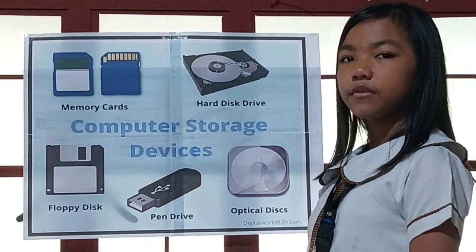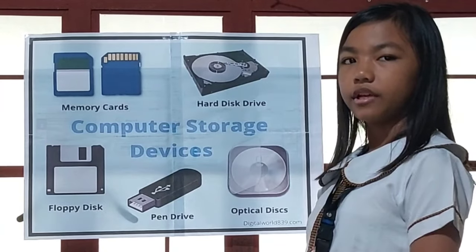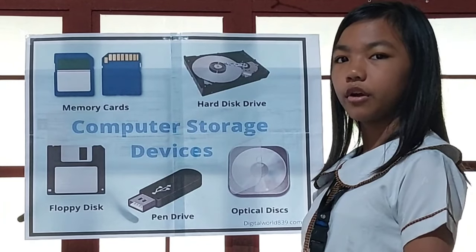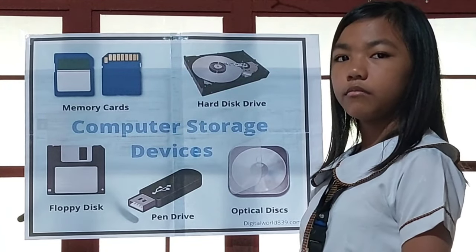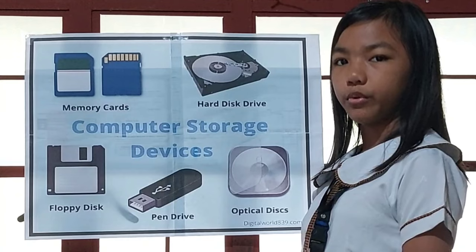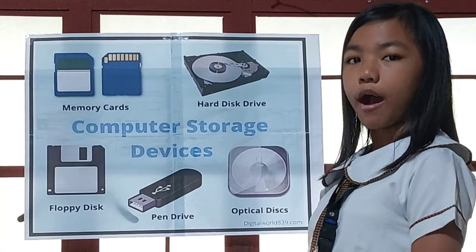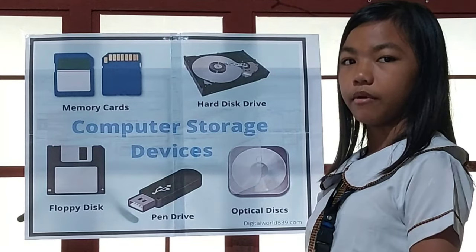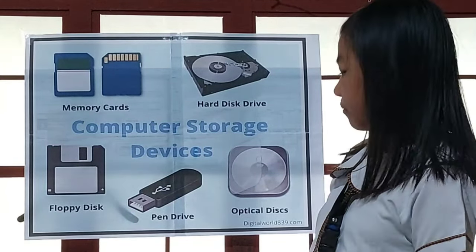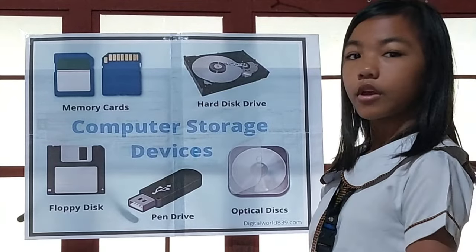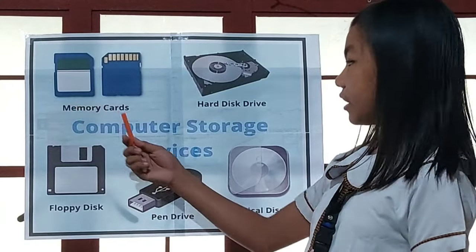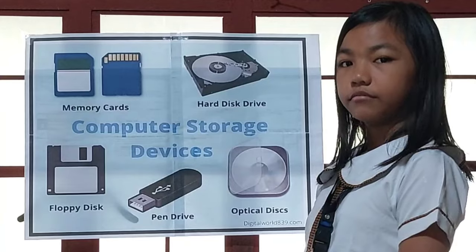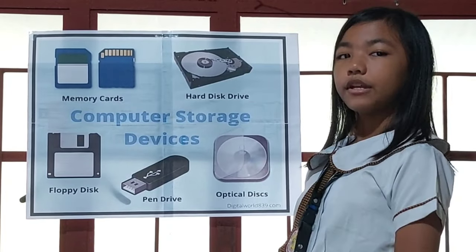Number 2: USB flash drive. It is a smaller, ultra-portable storage device, compatible with Windows, Mac, and Linux. Examples of flash drives include thumb drives, memory cards, and keychain drives.